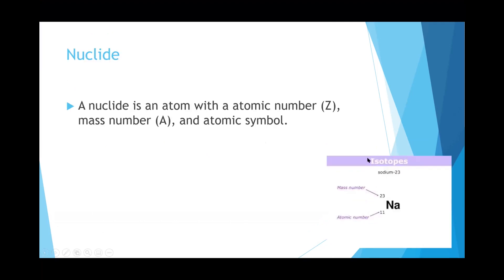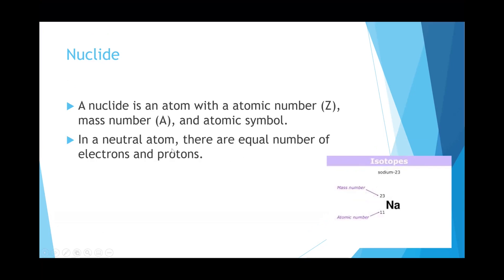As I was saying, this is how we define a nuclide. Remember, in a neutral atom there's an equal number of electrons and protons. The mass number A is always on the top; below that is the atomic number Z, and then the atomic symbol, which is the one or two letter abbreviation for an element. For example, Na stands for sodium, H for hydrogen, He for helium — it's unique to the individual atom.